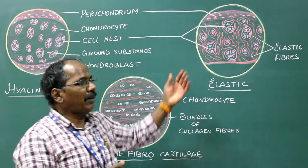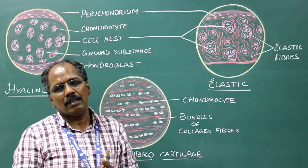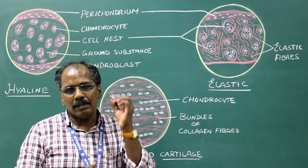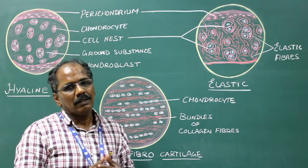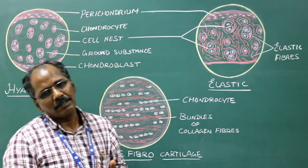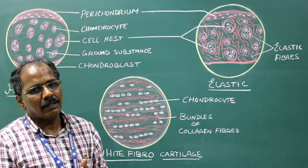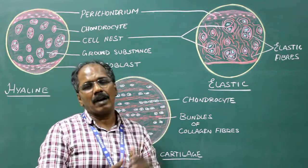Examples for elastic cartilage: pinna, the largest cartilage in the body, epiglottis, corniculate cartilage, and cuneiform cartilages.